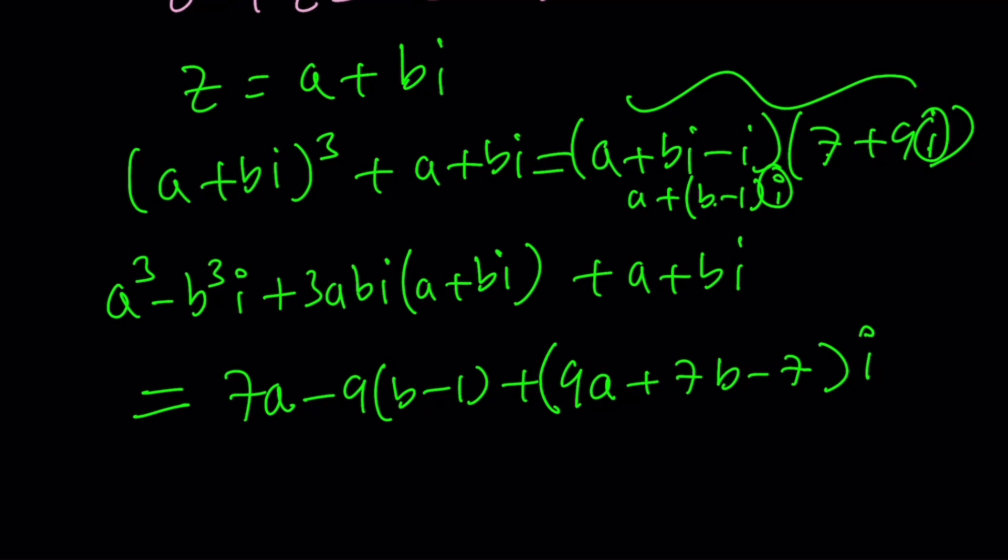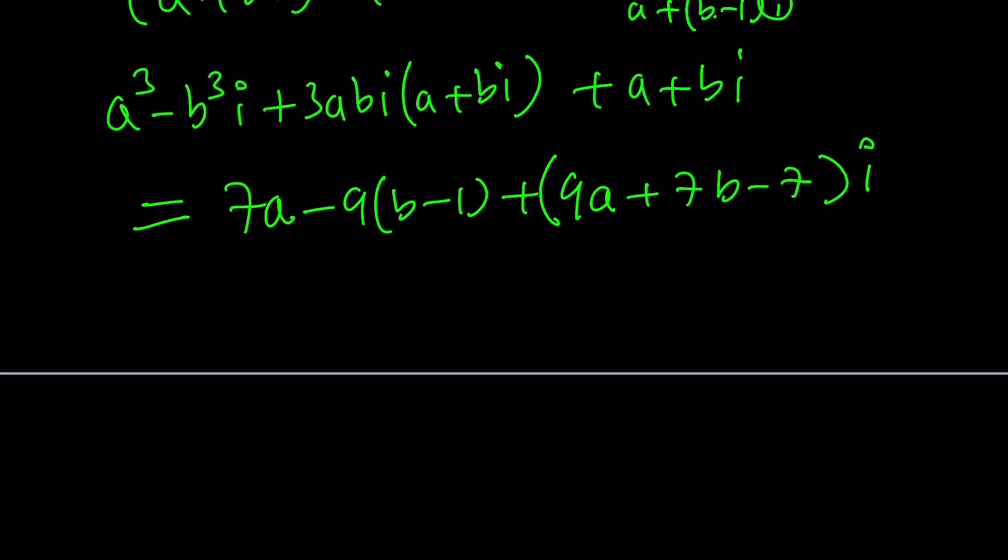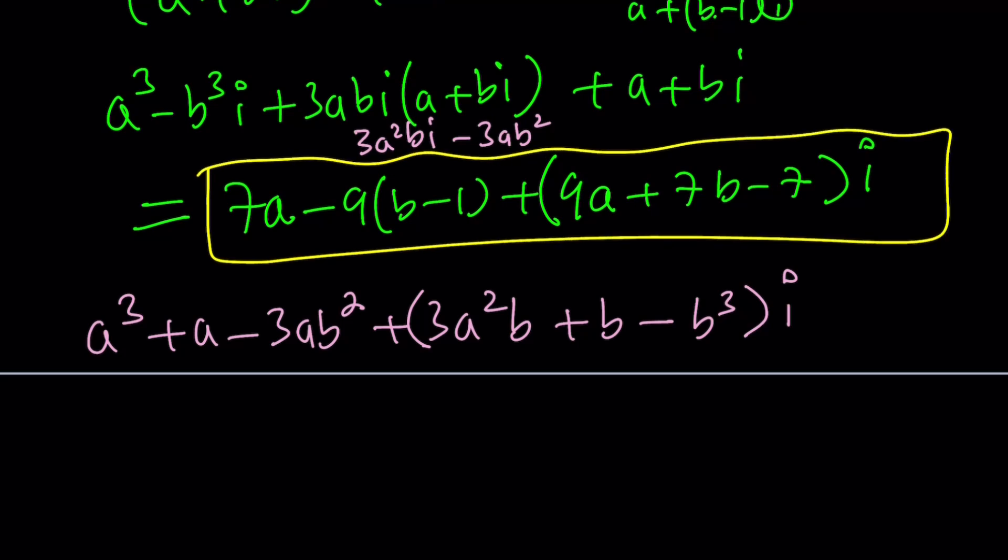We still need to simplify the left hand side. This gives me 3a²bi-3ab², because i² is -1 again. Don't ever forget that. Now the left hand side gives us a³ and then minus 3ab² plus a. Those are the real parts. The imaginary part is going to be 3a²b+b-b³. That's the imaginary part times i. Now, if you set this equal to this number here, what are you going to get? Real parts equal to real parts and so on.